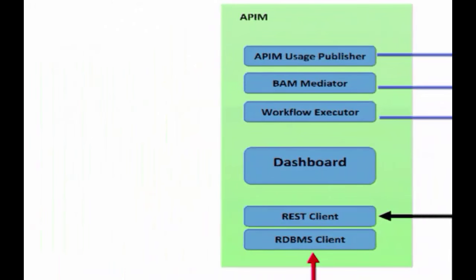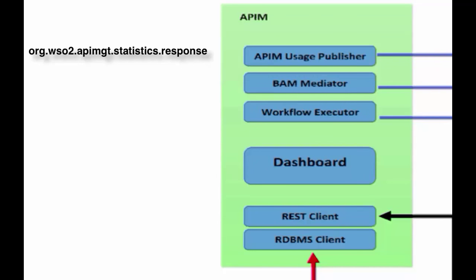Let's have a look at the internal components. The API Manager Usage Publisher is the internal API Manager component that listens to the API Manager invocations and its behavior. Based on the request and responses, events are generated and published to all event receivers. This publisher publishes the following event streams: org.wso2.apimgt.statistics.request, org.wso2.apimgt.statistics.response, org.wso2.apimgt.statistics.fault, and org.wso2.apimgt.statistics.throttle.